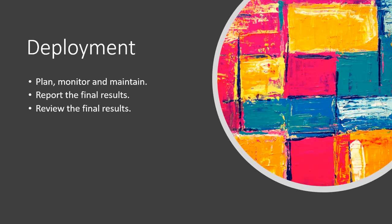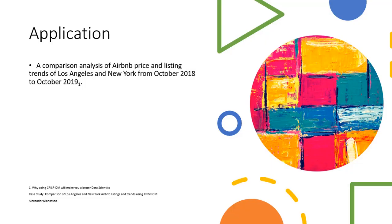The application of the CRISP-DM today is going to focus on a case that compared Airbnb pricing and listing trends from Los Angeles and New York from October 2018 to October 2019. And this author is Alexander Manthon if you want to look at the study.